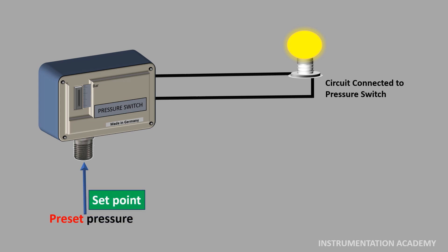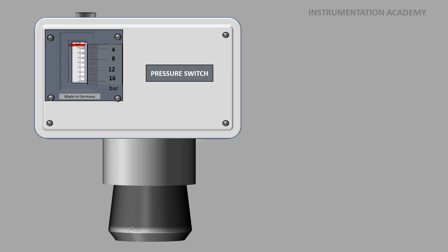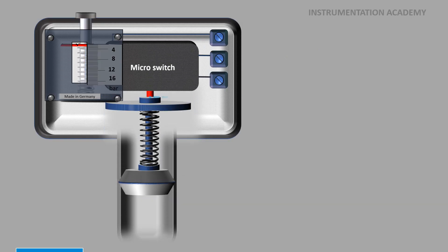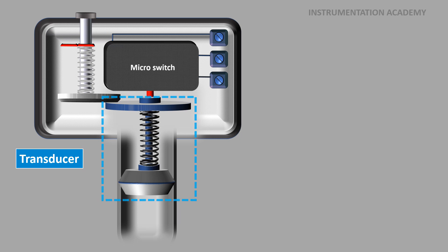Output of the pressure switch is digital, that means output can have only two states: on or off. A pressure switch mainly consists of a transducer which measures the pressure and an electrical switch. The transducer is the part that comes in contact with the process pressure.